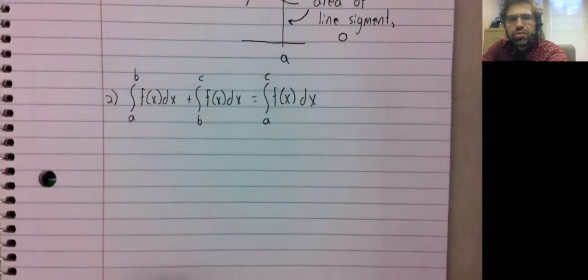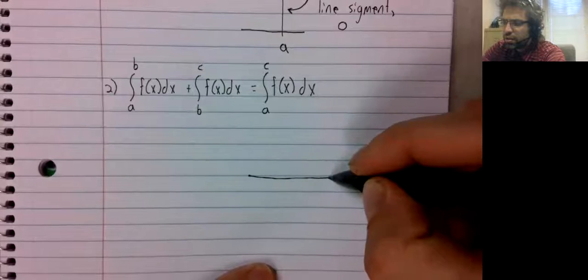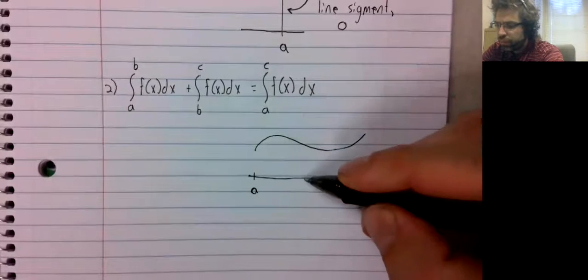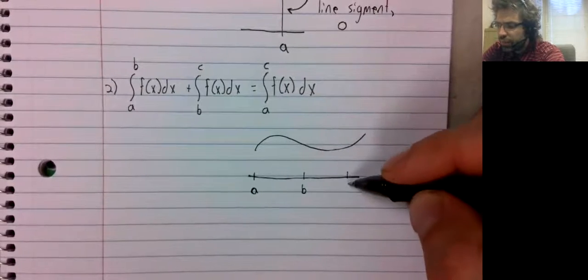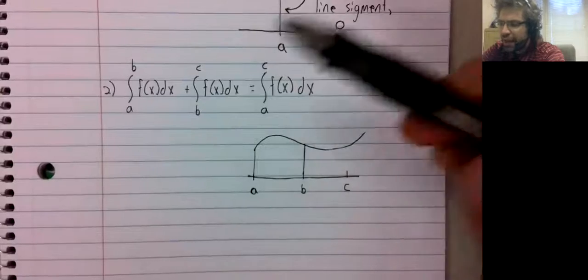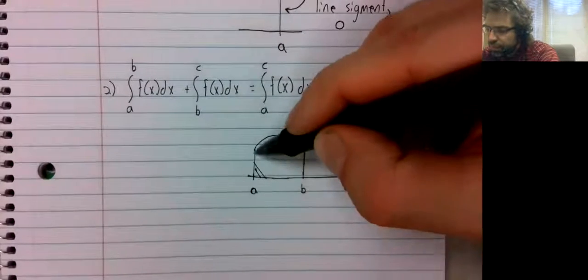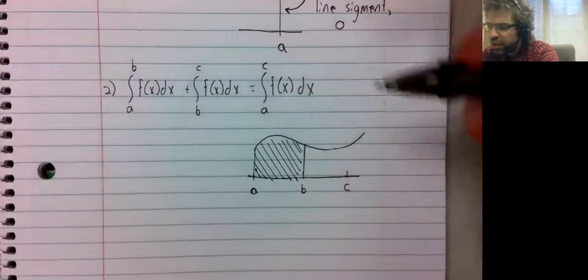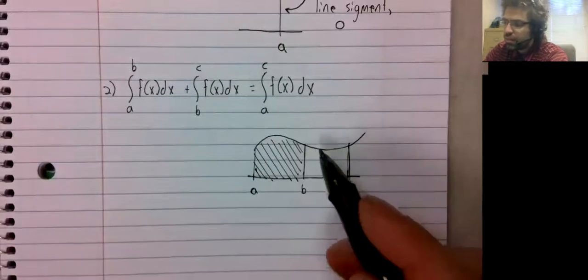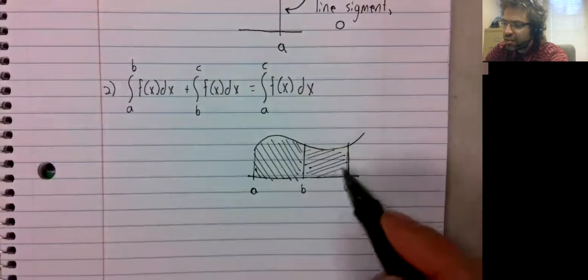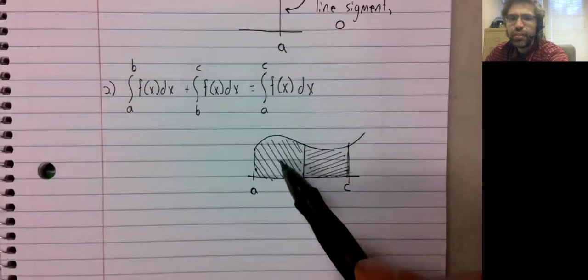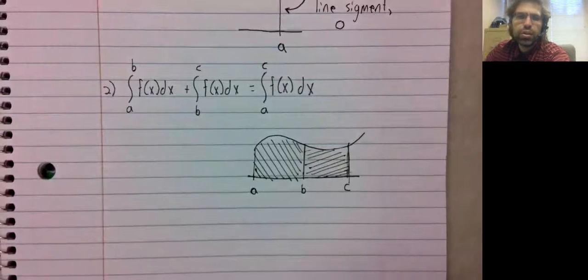And again, just think of this geometrically. If here's a, here's b, here's c, the integral from a to b is this area here. The integral from b to c is that area there. And then, of course, the area from a to c is just these two areas combined.